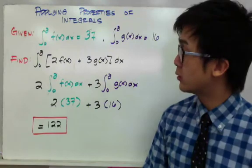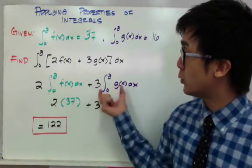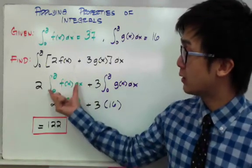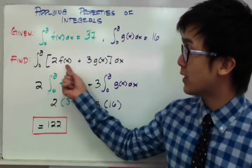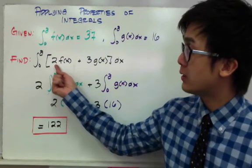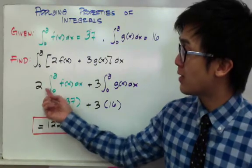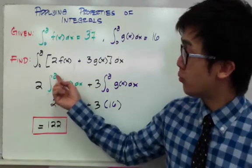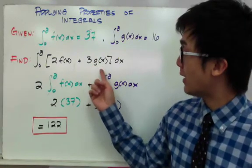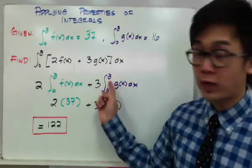To apply the integral notation, since this is addition, we can separate the two terms and evaluate the integral separately. For the first integral, we have 2f(x). Since in our property we can transpose the constant outside the integral symbol, we'll have 2 times the integral of f(x) dx from 0 through a, and 3g(x) can be written as 3 times the integral of g(x) dx from 0 through a.